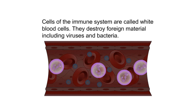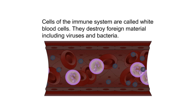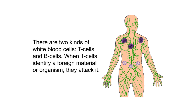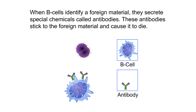Cells of the immune system are called white blood cells. They destroy foreign material, including viruses and bacteria. There are two kinds of white blood cells: T cells and B cells. When T cells identify a foreign material or organism, they attack it. When B cells identify a foreign material, they secrete special chemicals called antibodies. These antibodies stick to the foreign material and cause it to die.